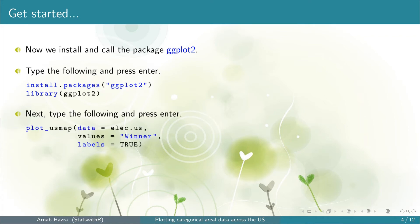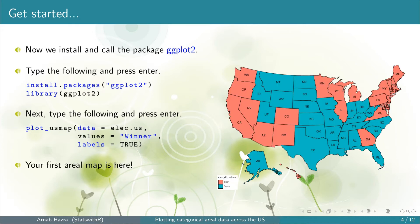In the console window, type plot_usmap with data equals to elect.us, values equals to winner within quotes — the variable we want to plot — and labels equals to TRUE. This prints the abbreviated state names. Now press enter. You get your first aerial map.